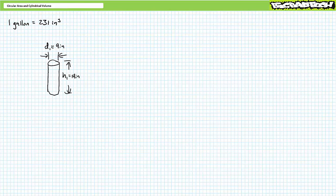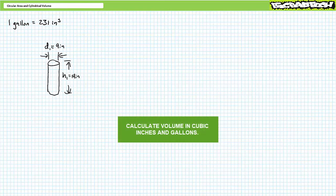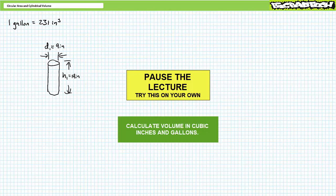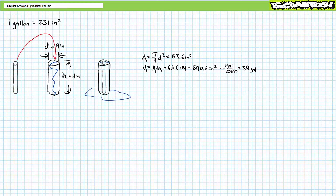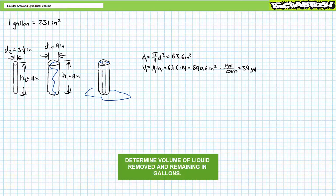Consider a cylinder with a diameter of 9 inches and a height of 14 inches. Determine the volume in cubic inches and convert to gallons. If you're tracking, the cylinder has an area of roughly 63.6 square inches and a volume of roughly 890.6 cubic inches. A unit conversion demonstrates 890.6 cubic inches is roughly equivalent to 3.9 gallons. Bonus round: fill this cylinder with 3.9 gallons of liquid and drop in a smaller solid steel cylinder with a diameter of 3.25 inches and a height of 14 inches. How much liquid spills out and how much remains? Express your answer in gallons — note any quantity less than one gallon must be expressed as a fractional or decimal equivalent.